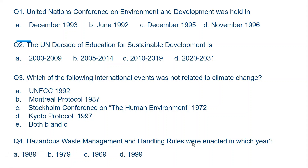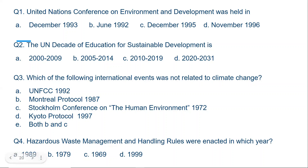Question number four. Hazardous waste management and handling rules were enacted in which year? Options: A) 1989, B) 1979, C) 1969, D) 1999. The correct answer is A, 1989. For the first time, hazardous waste management and handling rules in India were enacted in the year 1989. After that, these rules were amended several times. The final regulation applied today is Hazardous Waste Management, Handling and Trans-boundary Movement Rules 2016.